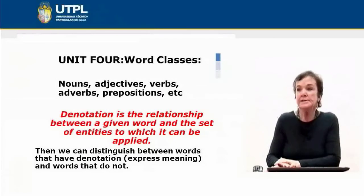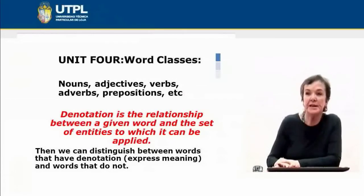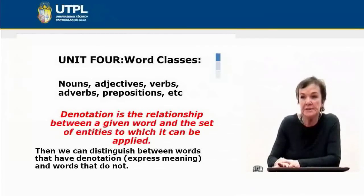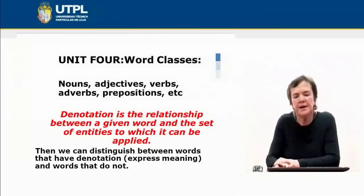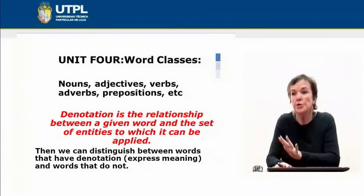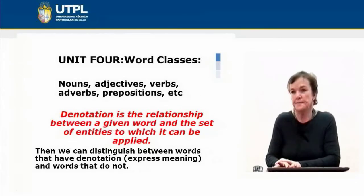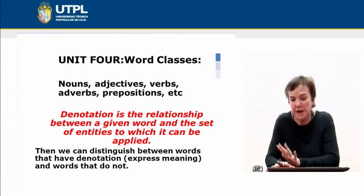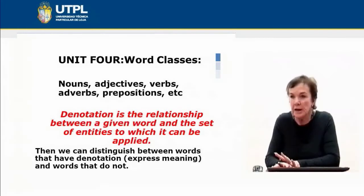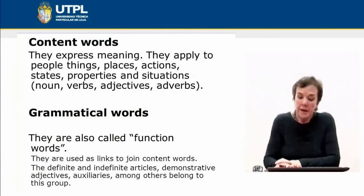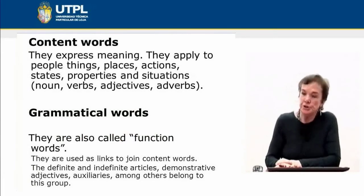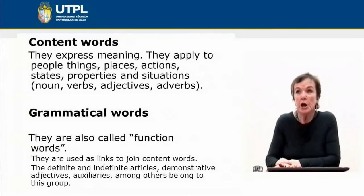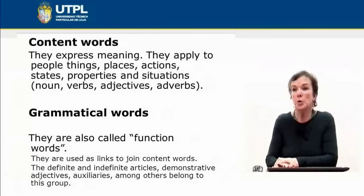We can distinguish between words that have denotation and express meanings, and words that have very little or no meaning. For instance, auxiliaries in English do not express meaning. According to denotation, words are divided into two groups: content words and grammatical words.